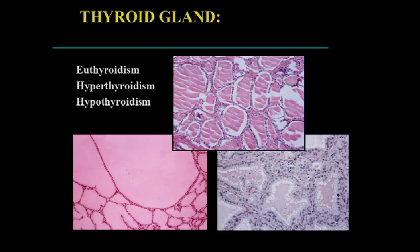Normally, the follicles are pinpoint to a couple of millimeters with some variation. In patients with hyperplastic conditions or hyperfunction, the lining cells are tall and columnar, and the colloid is actively being reabsorbed and discharged into the bloodstream as hormones — giving a peripheral scalloping or moth-eaten appearance. In hypofunctioning states, you have inactive lining cells with abundant colloid in the center.